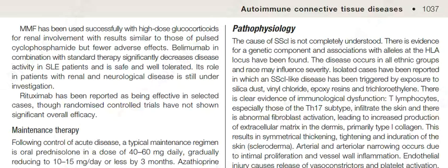The cause of systemic sclerosis is not completely understood. There is evidence for a genetic component, and associations with alleles at the HLA locus have been found. The disease occurs in all ethnic groups and race may influence severity. Isolated cases have been reported in which a systemic sclerosis-like disease has been triggered by exposure to silica dust, vinyl chloride, epoxy resins, and trichloroethylene.